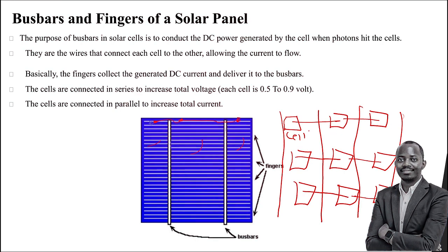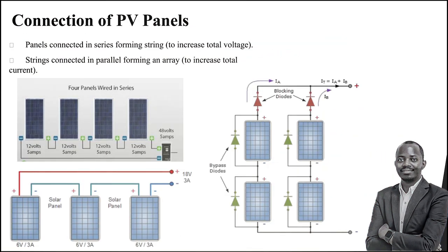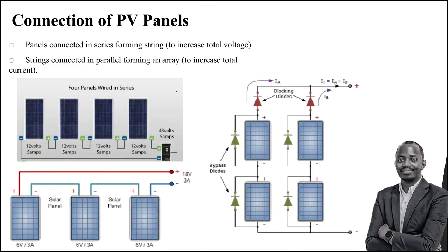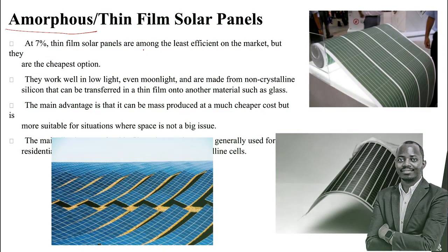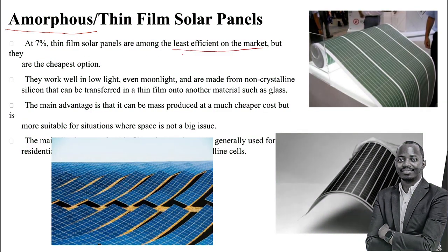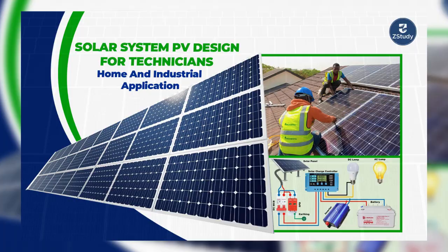When cells connect in series, in terms of the solar panel you can see that panels connected in series form what you call a string. The purpose of this is to increase the voltage. The thin film solar panels are among the least efficient on the market, but they are the cheapest option.